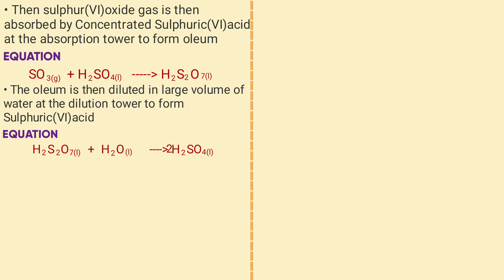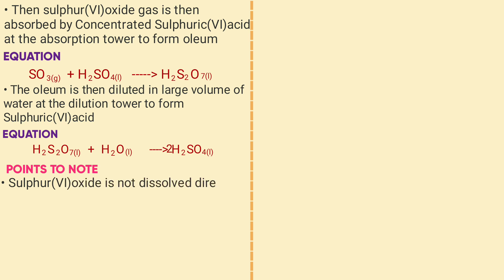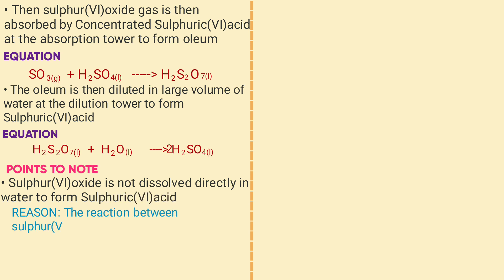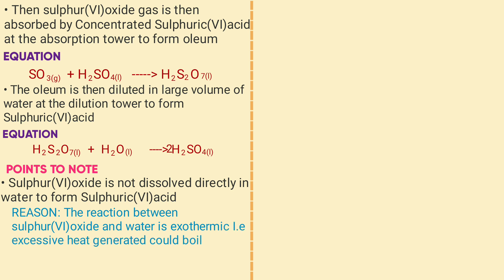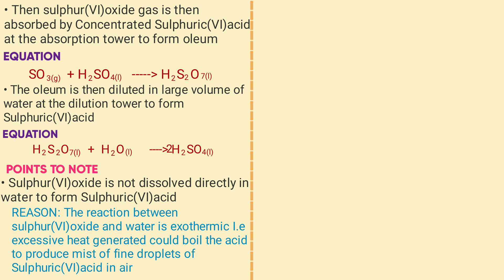Note the following: sulfur trioxide is not dissolved directly in water. The reason is that the reaction between SO₃ and water is exothermic; the excessive heat generated could boil the acid to produce mists of fine droplets of sulfuric acid in air. Point two: the pollution effect of sulfur trioxide is controlled by scrubbing.